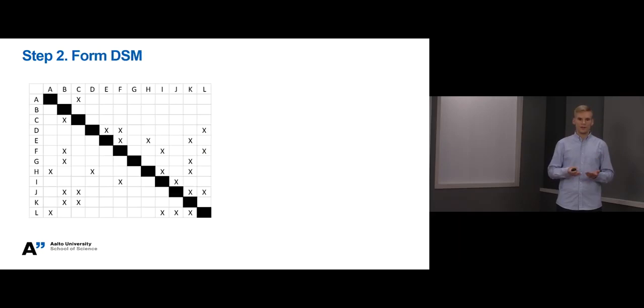Alright, here we have documented the interactions of Project Alpha and formed a matrix representation. So, how do we interpret this matrix? Well, in general, rows indicate the information that different tasks require. In turn, columns indicate the information the different tasks produce for other tasks. I will give you some examples.